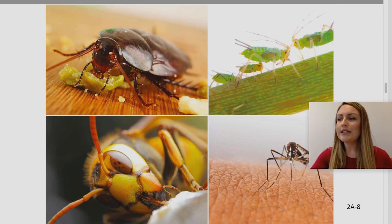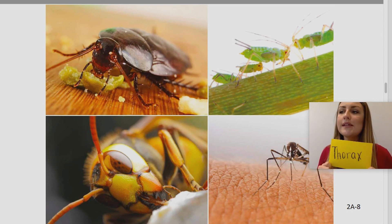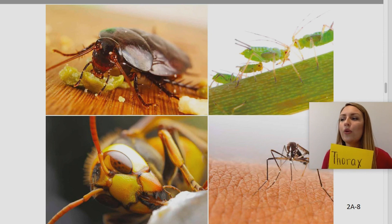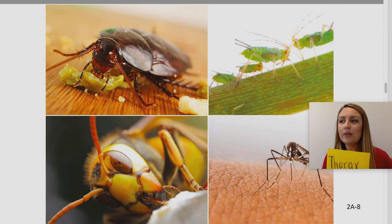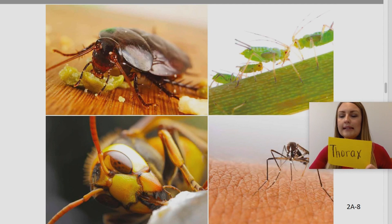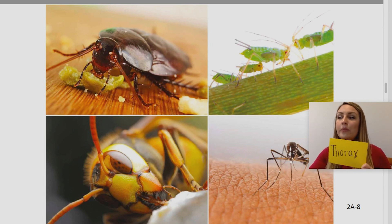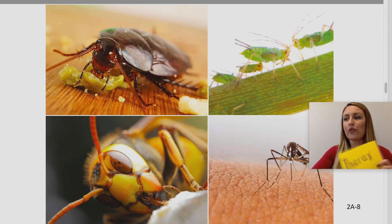The last vocabulary word we're going to review today is thorax. You say it — thorax. This word is a noun. The definition is the middle part of an insect's body between the head and the abdomen. The body segment contains the heart and the leg attachments. An example: Joshua's favorite dragonflies have a bright green thorax. You might even hear the plural forms thoraxes or thoraces.